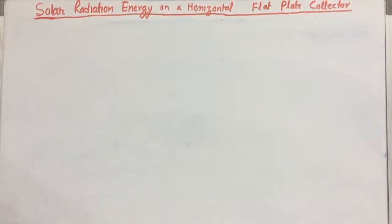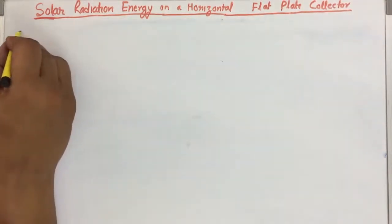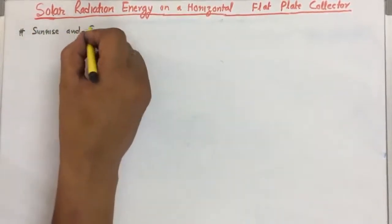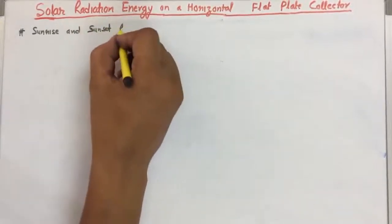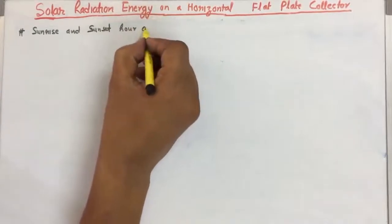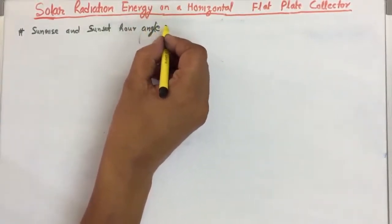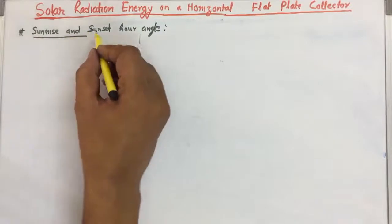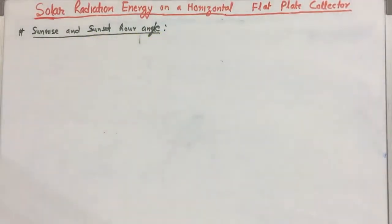In the previous lecture we found that the total energy of the solar radiation indicated by H0 was almost found, and the only thing required was the sunrise angle. So today we will try to find the sunrise and sunset hour angle so that we can find the radiation energy at any particular day, at any particular time, for any particular location.